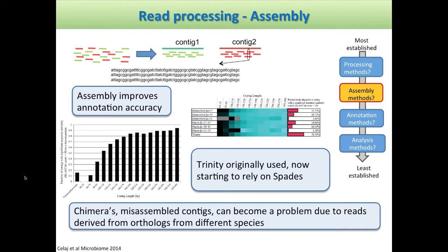One issue that could arise — though we haven't had too many problems with it — is chimeras: misassembled contigs that can be particularly problematic where reads are deriving from homologs from different species. We haven't found this to be too significant a problem in metatranscriptomics; about one to three percent of our contigs might represent some kind of chimera, so it's relatively low. There are tools such as UCHIME that you might be able to apply to identify and correct some of these chimeras.